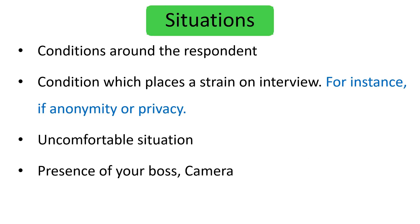The second source of error in measurement is the situation. The situation means the environment or the conditions or the circumstances around the respondent. This may be a source of errors. For example, if the conditions place a strain on the interview, or if there is an issue of anonymity or privacy, or in general, if there is an uncomfortable situation around the respondent, this may be a source of errors.